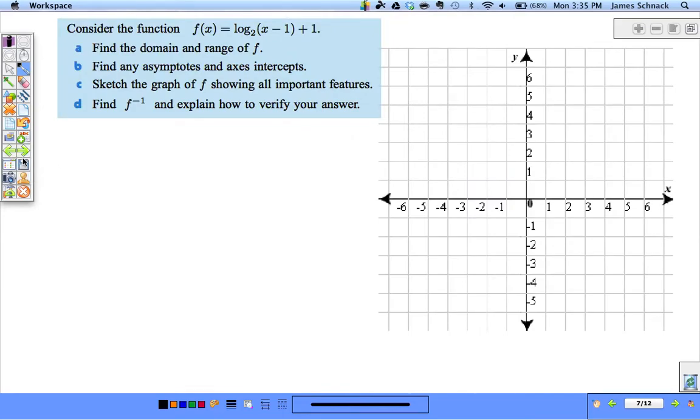So here we go. I want to graph the equation log base 2 of X minus 1 plus 1. I mean, ew, gross. I need the domain and range. I need the asymptotes, axes, intercepts. Sketching the graph and find F inverse.